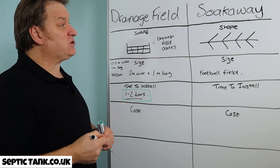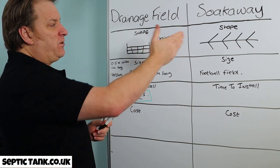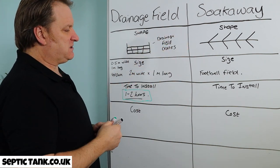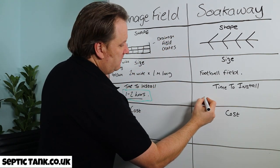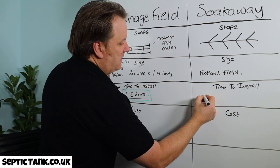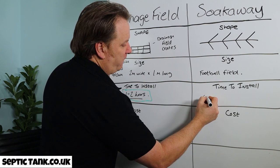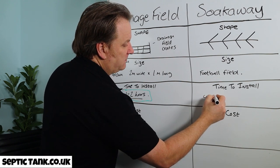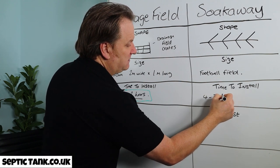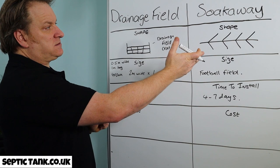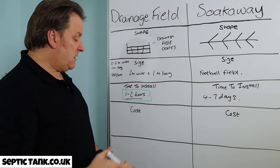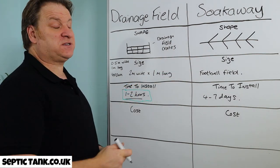In the old traditional way of putting a herringbone system in, they can take anywhere from four to seven days to install that kind of system.